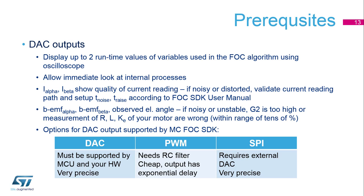The next step continues with signal flow, and we can look at the back EMF alpha and back EMF beta. If it's noisy, small, or limited at some value, then we can adjust the observer G2 parameters and also the PLL parameters.